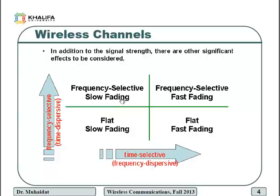To summarize: the channel is flat or non-frequency selective if the symbol period is greater than or equal to 10 times the delay spread, or if the symbol rate is less than the coherence bandwidth.